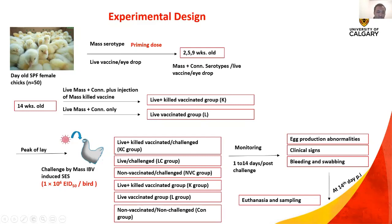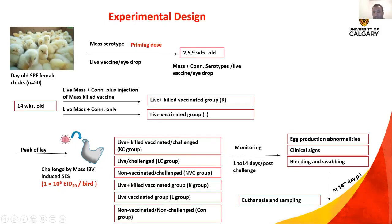At the peak of egg production, we challenged three groups of birds with IBV mass-induced shell-less egg strain at a dose of 10 to the power of 6 EID50 per bird through the oculonasal route. The group names changed after challenge: the KC group became KC-C (killed vaccinated, challenged); live vaccinated then challenged was named LC; non-vaccinated challenged was called NVC; and non-vaccinated, non-challenged was the control group. We kept the birds for about two weeks, monitoring daily egg production, egg production abnormalities, and clinical signs. We also collected blood samples and oropharyngeal and cloacal swabs at different time points, and at the end of two weeks we performed euthanasia and sampling of all groups.